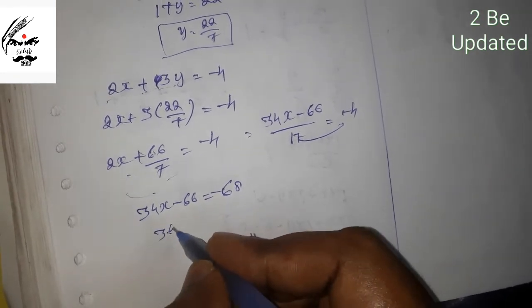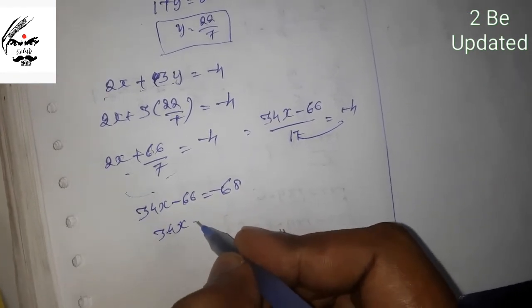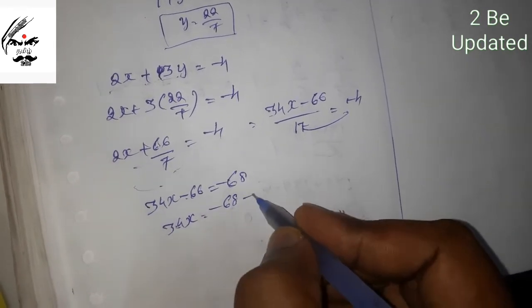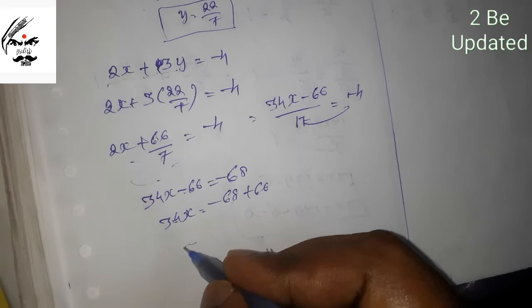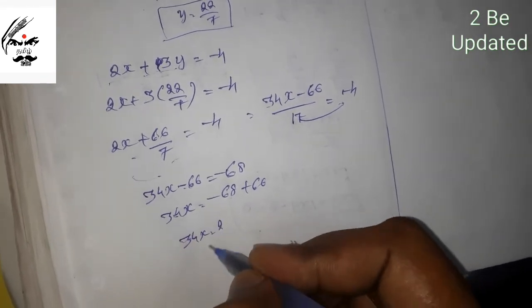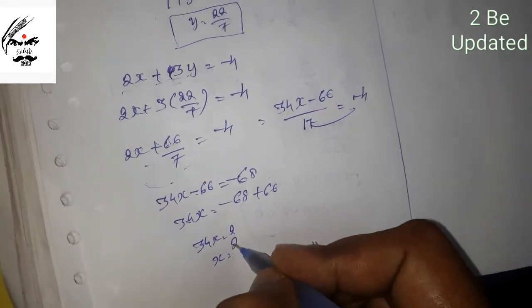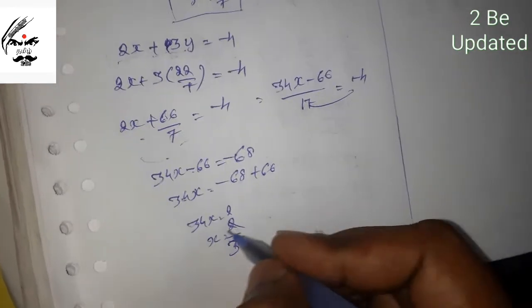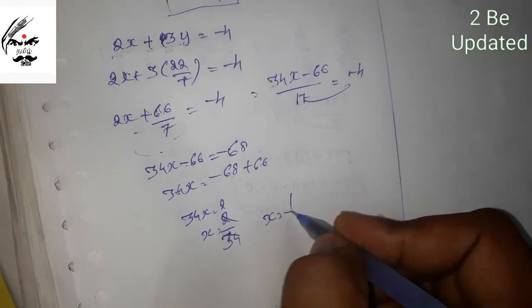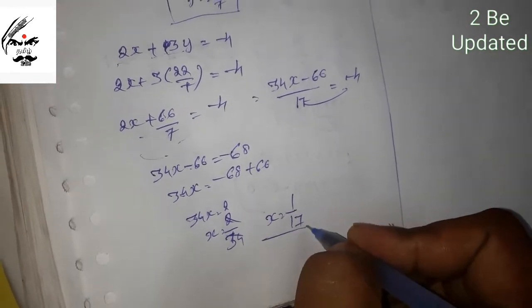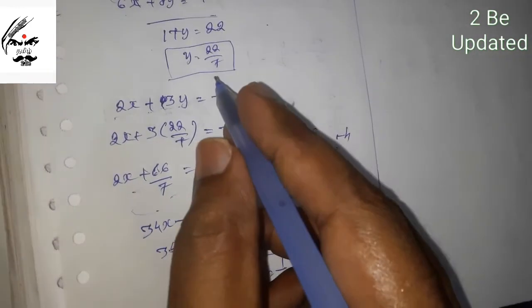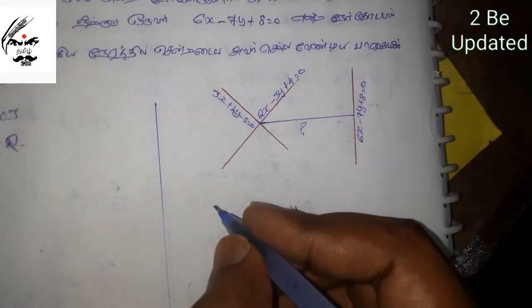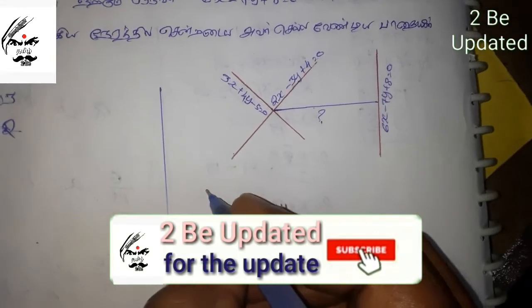So 14x is equal to minus 66 plus 28, which gives 14x is equal to 38. Therefore x is equal to 2 by 7, which simplifies to 1 by 17. So we have the point (1/17, 22/17).